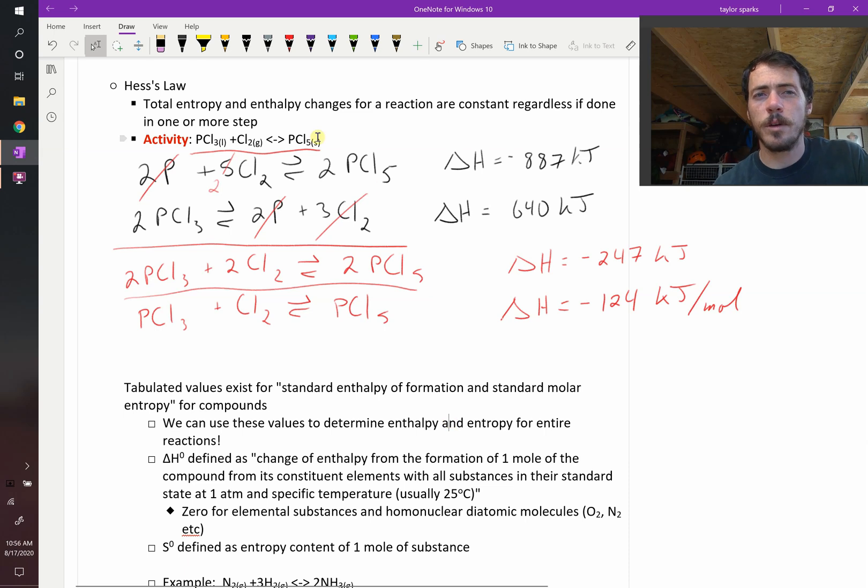Okay, Hess's law tells us that we can do changes of reactions, whether we do that reaction in one step or we break it up into multiple steps, it's the same. But how did we get these values for the change of enthalpy, for example, to start with?